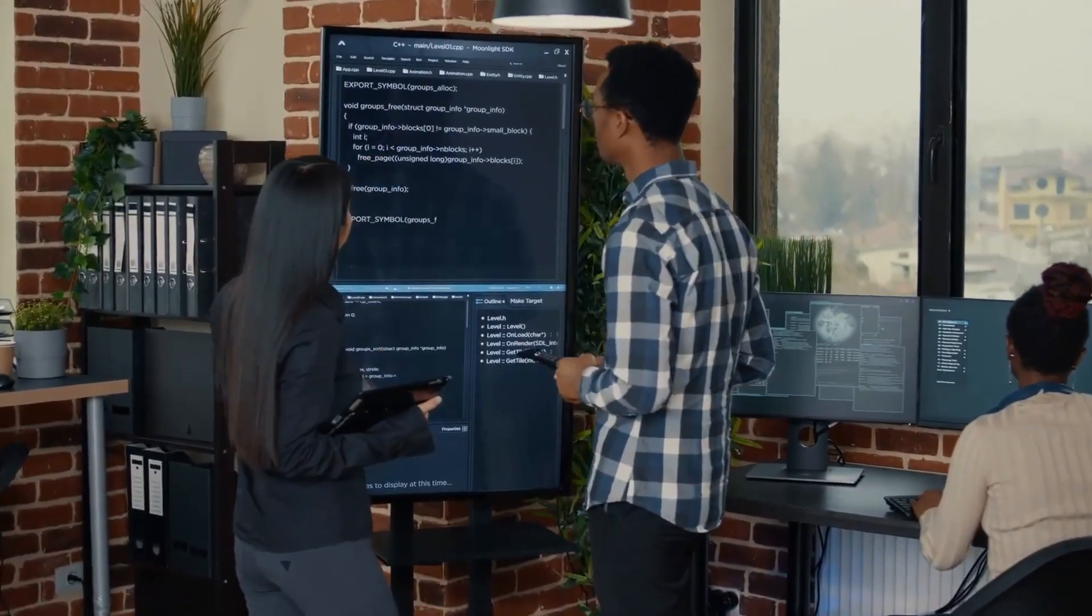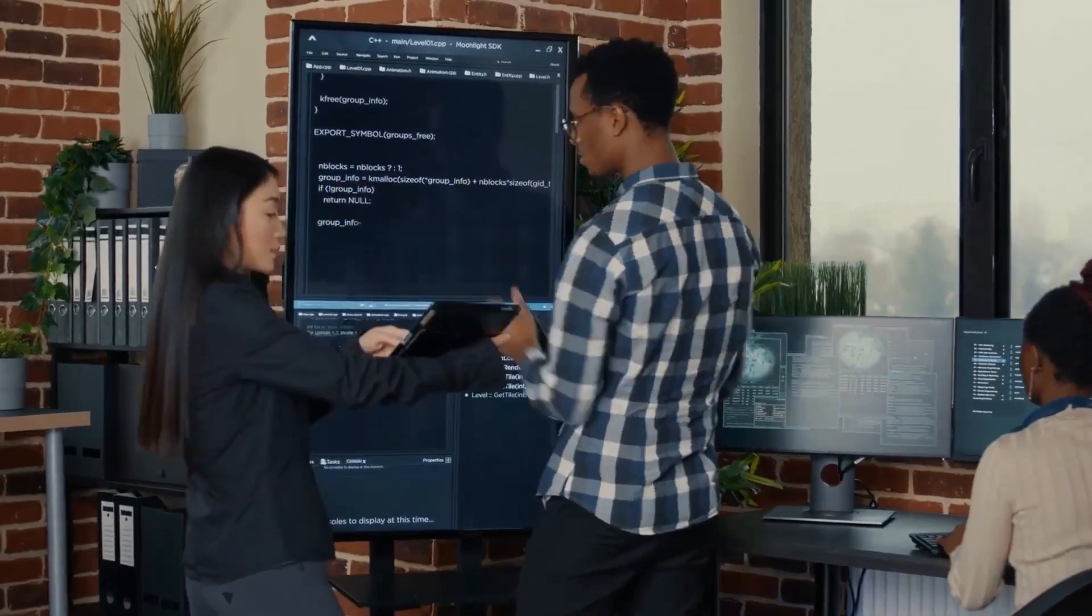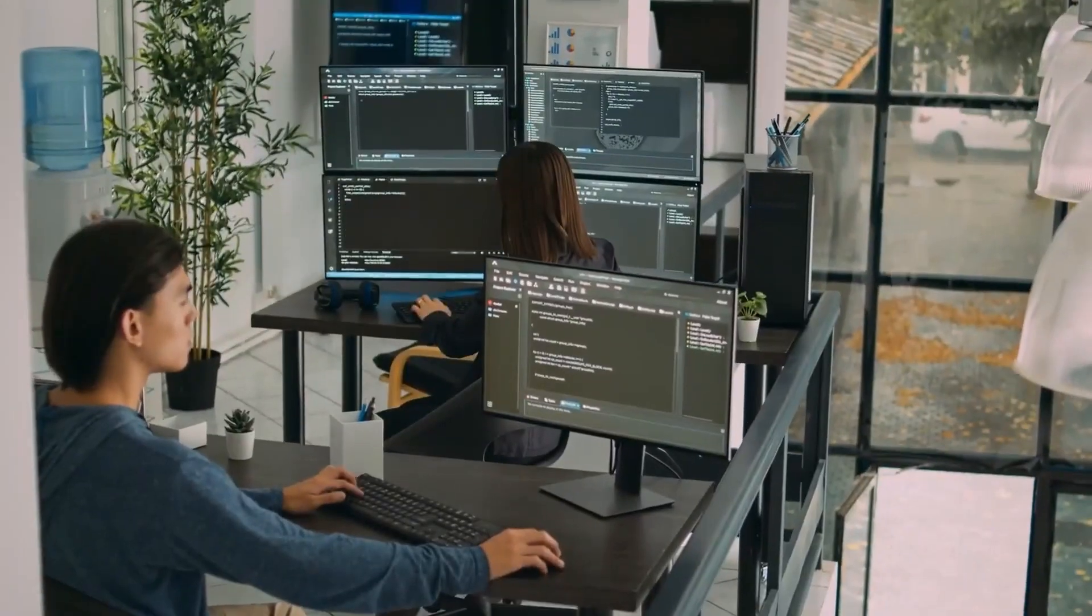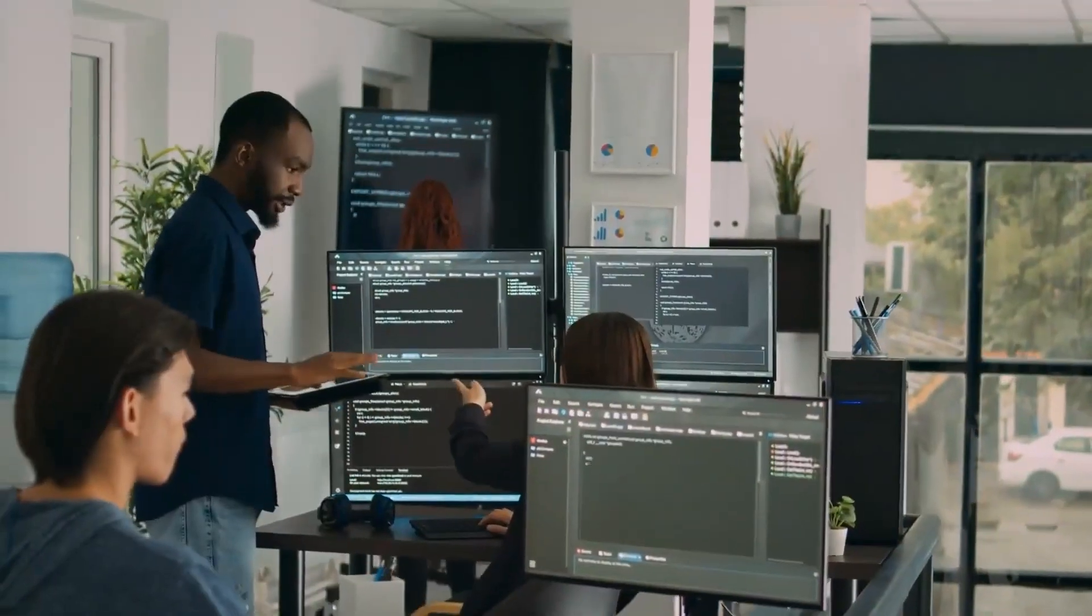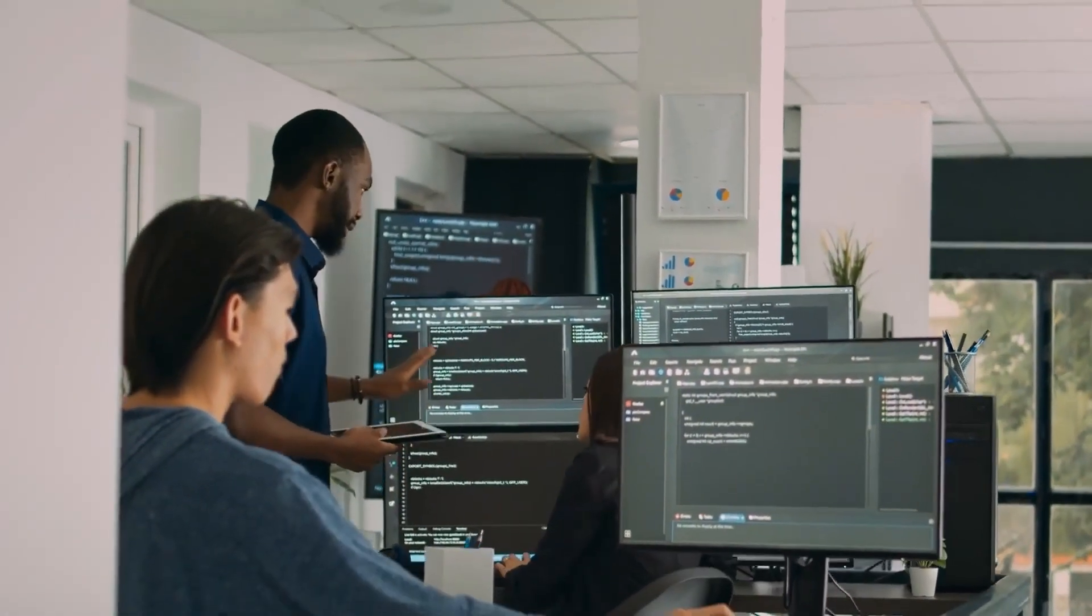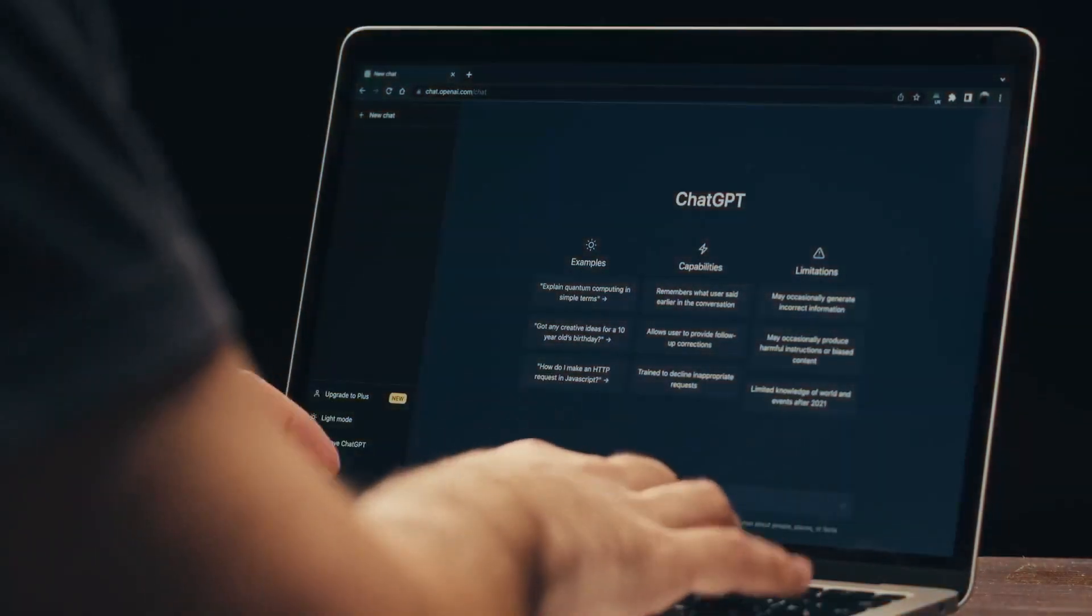Number 2: Prompt Engineering. Crafting the perfect questions or commands for AI systems can make all the difference. Learn how to communicate effectively with AI to get the best results. Design prompts for AI writing tools like ChatGPT, Microsoft Copilot, and Google Bard to generate high-quality content.